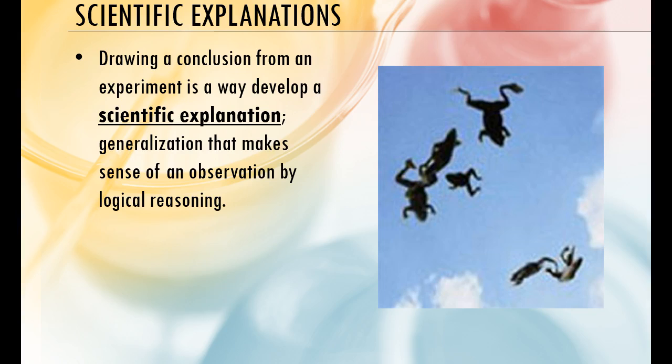Scientific explanations are essentially drawing conclusions from an experiment — a generalization that makes sense of an observation by logical reasoning. If you're using the CER method we practiced in class, the scientific explanation is the reasoning piece: your evidence is the data, and the reasoning ties it together. For example, the question might be: why are frogs falling from the sky? Your claim or hypothesis: if violent storms sweep frog larvae from rivers and streams up into the atmosphere, then when it rains those frogs will come back to Earth. Your evidence might be collecting data in a storm showing frog larvae whipped into the atmosphere, and then observing frogs falling after a particularly nasty storm.